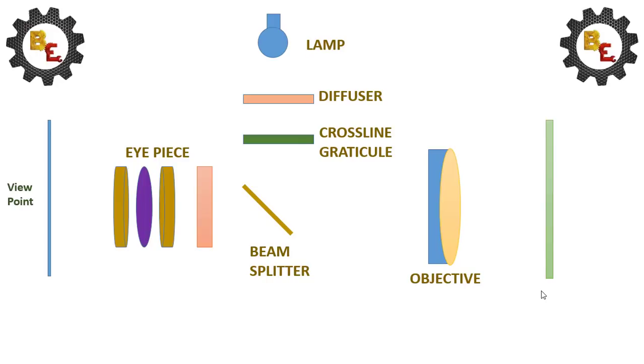The light waves will be projected from the lamp. It will be projected on the diffuser and it will converge on the cross-line graticule.